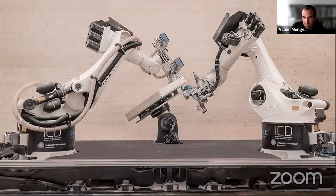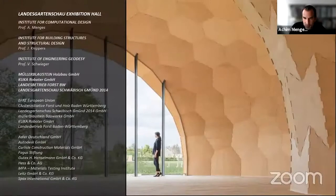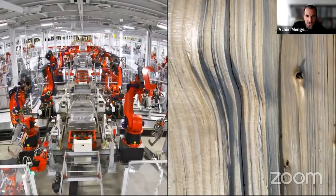Robots are very different from CNC mills or CNC saws. They're not just the automated version of a formerly manual process — they really allow us to design the very making of a piece of timber as well as the design of the product. I'll explain this through two projects we've been working on over the last ten years. I'll start with the Landesgartenschau exhibition hall project, the result of a research project called 'Robotics in Timber Construction.'